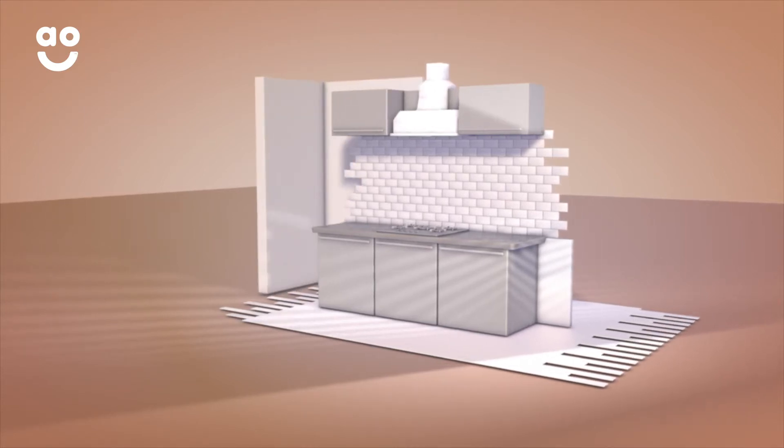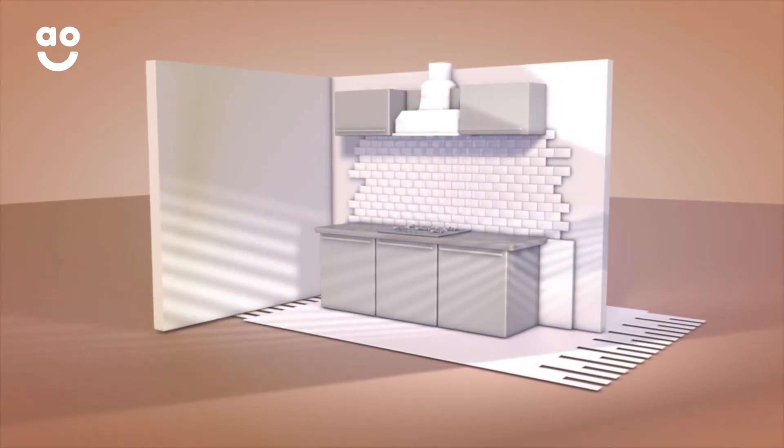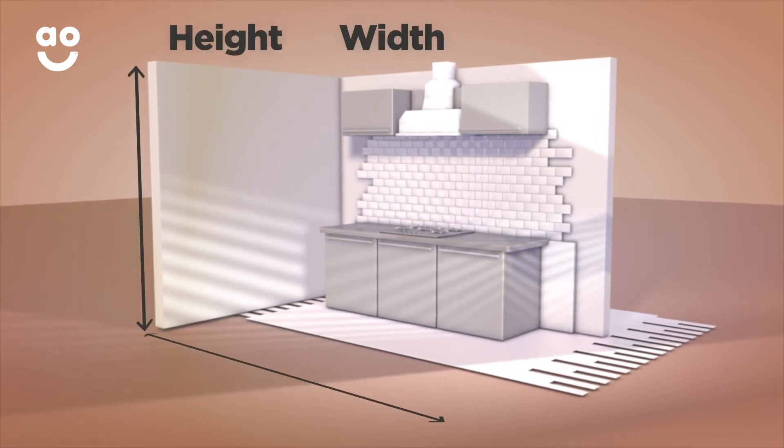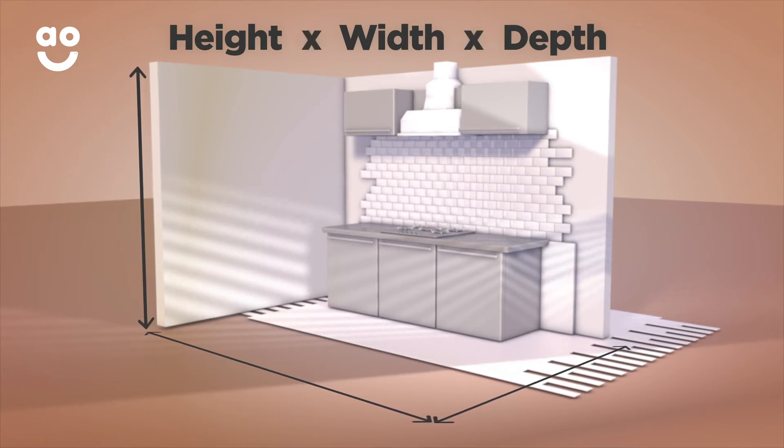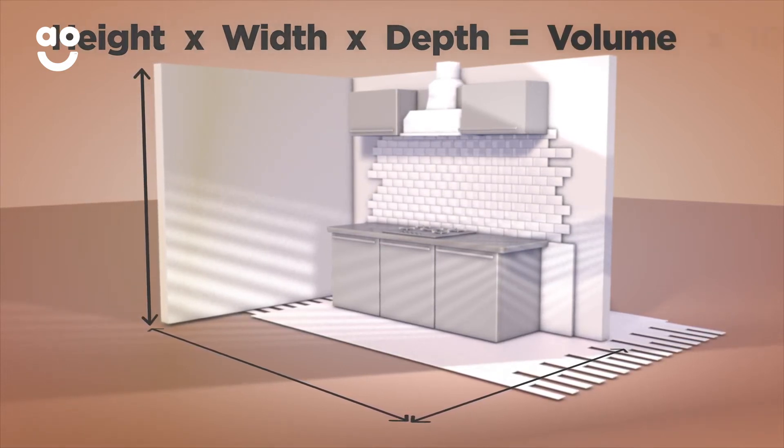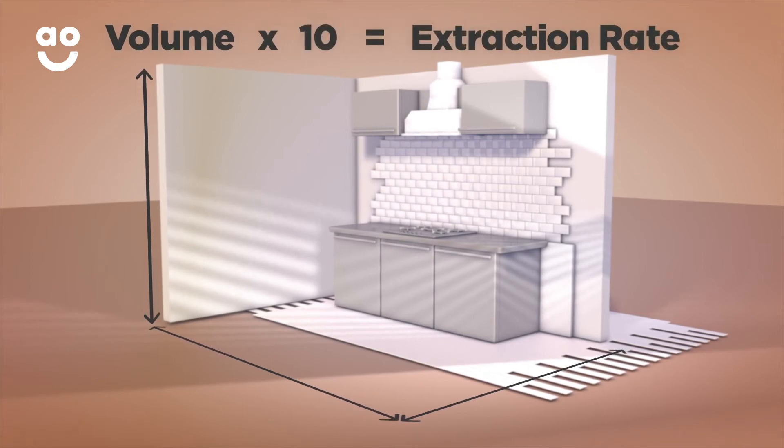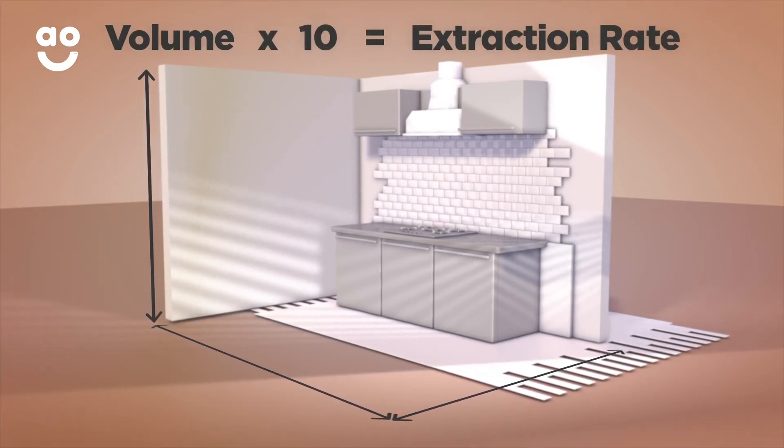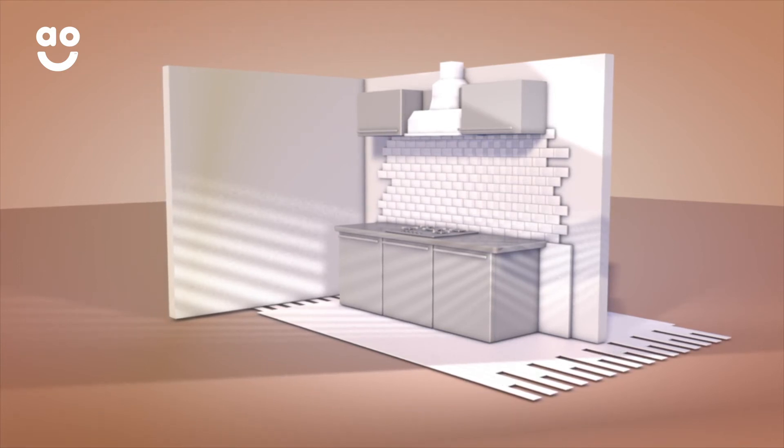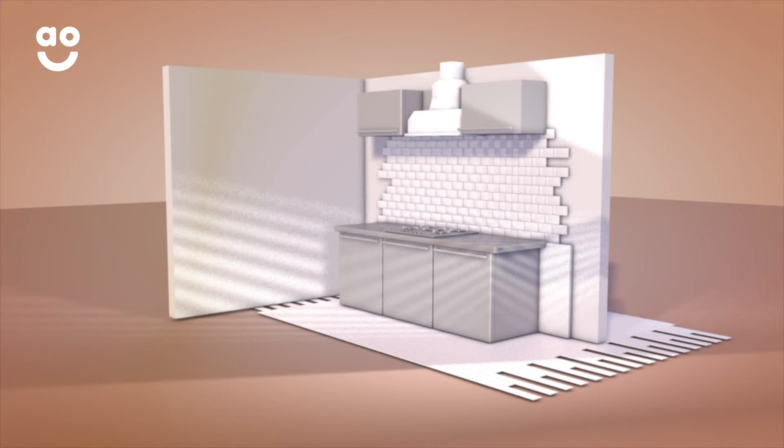To find out the perfect extraction for your kitchen, you'll need to know what the volume of your kitchen is. This is really easy to work out. Measure the height, width, and depth of your kitchen and multiply these three numbers to get the total volume. Once you have this number, multiply it by 10 to get the extraction rate needed. Compare the final figure on our product page's key information tab online to match it with your perfect hood.